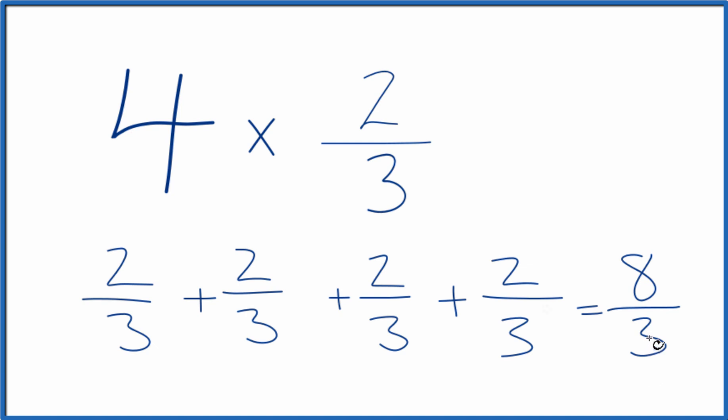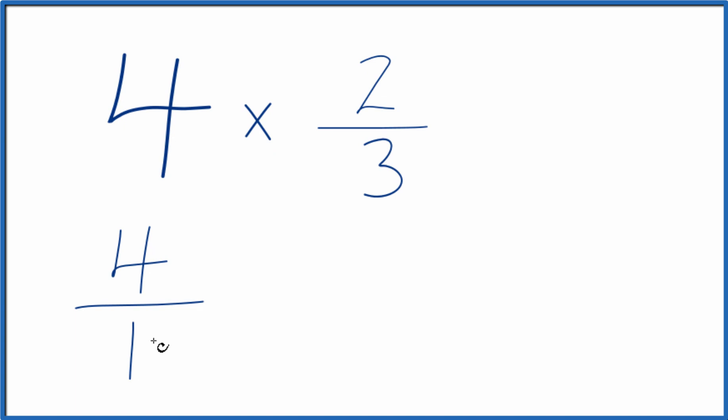Here's another way you can do it. You could think about 4 as 4 over 1, because 4 divided by 1, that's still 4. And then we multiply that by 2 thirds.